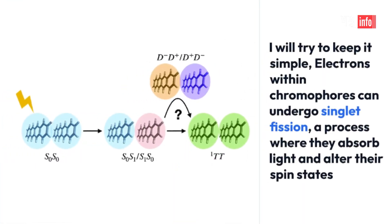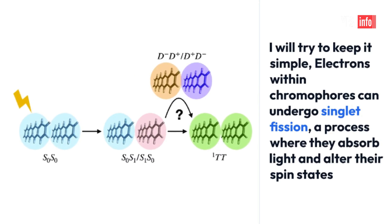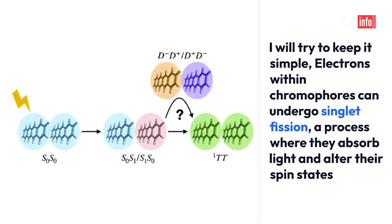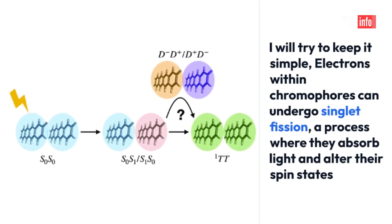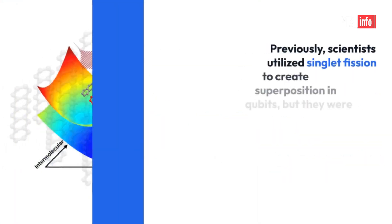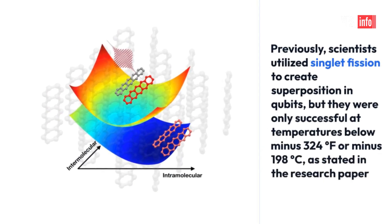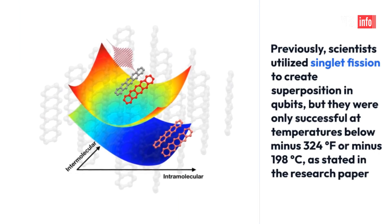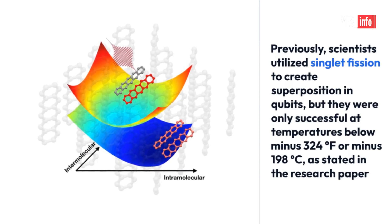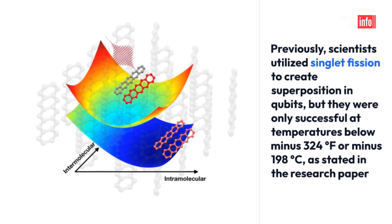Electrons within chromophores can undergo singlet fission, a process where they absorb light and alter their spin states. Previously, scientists utilized singlet fission to create superposition in qubits, but they were only successful at temperatures below minus 324 degrees Fahrenheit, or minus 198 degrees Celsius, as stated in the research paper.